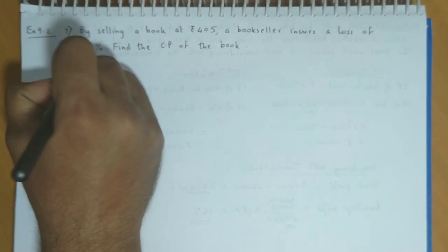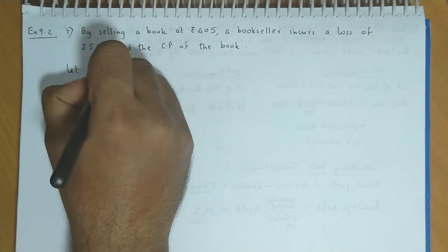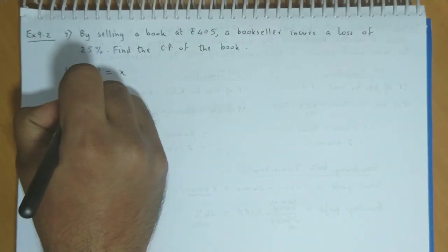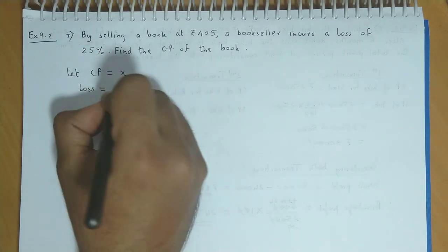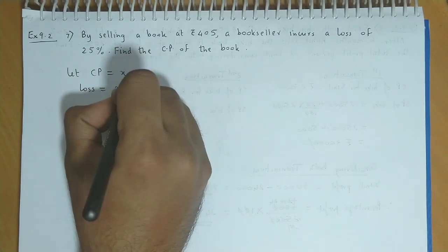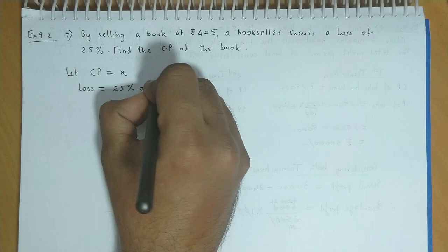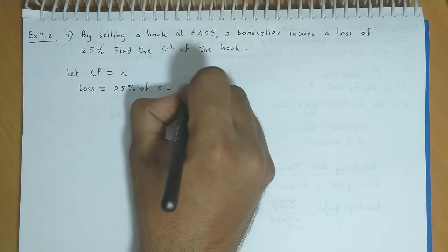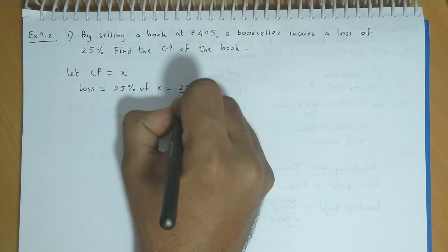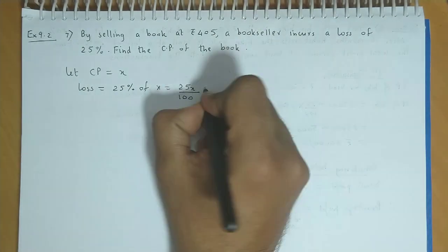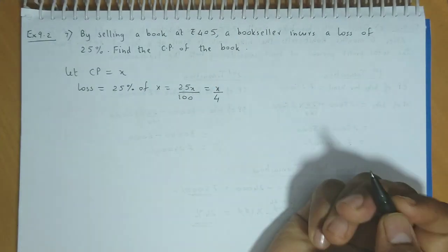Let the cost price be x. Loss is 25% of x, that is 25x/100, or we can write this as x/4.